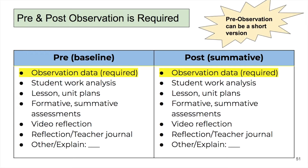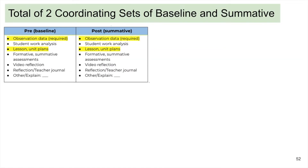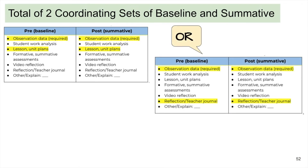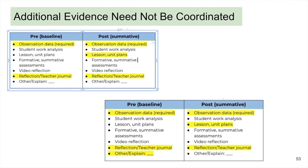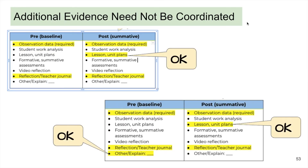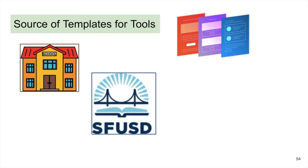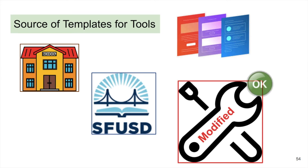However, the pre-observation can be an informal short version. In addition, one more coordinating set of tools must be linked as evidence. Beyond the set of two coordinating pieces of evidence, you may link any additional tools, coordinating or non-coordinating. For any of the evidence or tools, you may use the district or site templates, or you have the option to use modified versions.